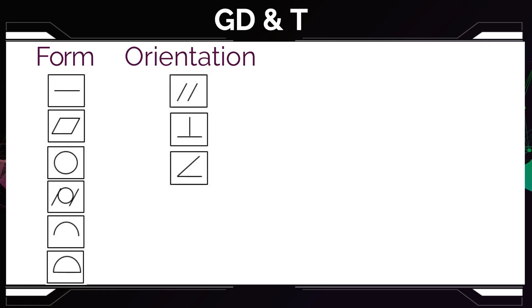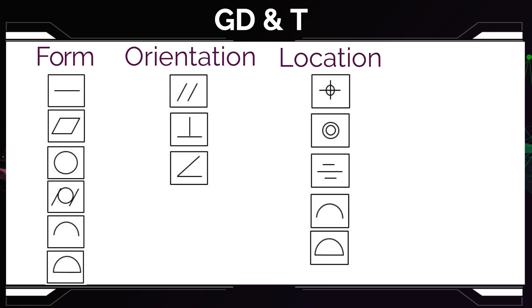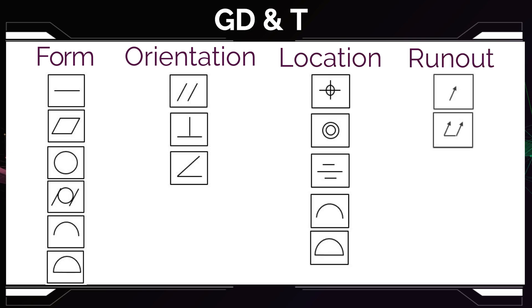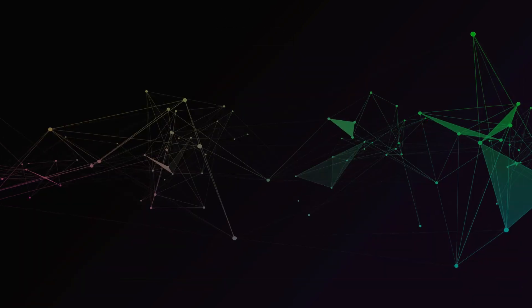There are the form tolerances, and there are the orientation tolerances, and then you have location tolerances and run-out tolerances. Run-out tolerances control the function of a part rotating.